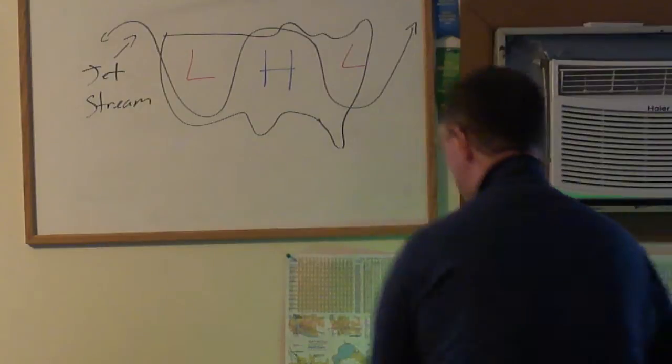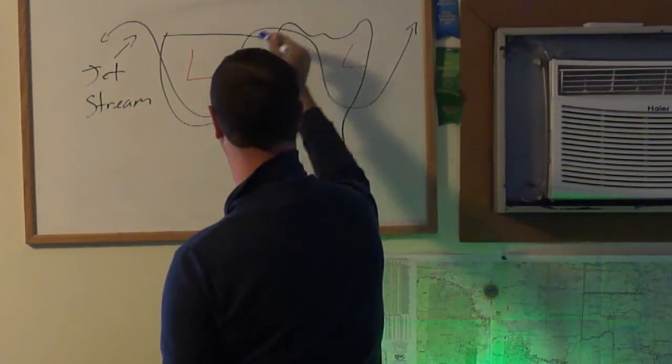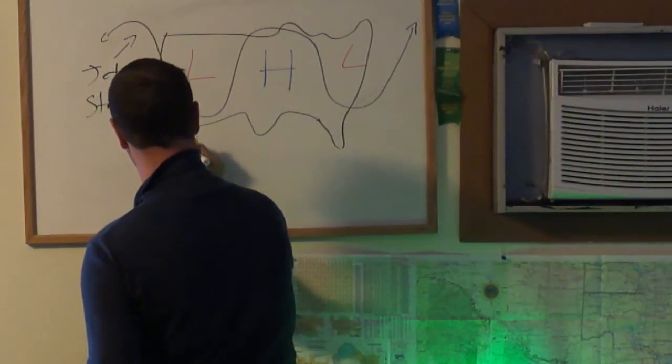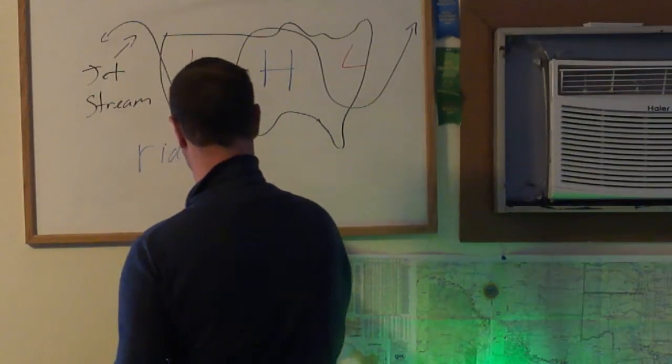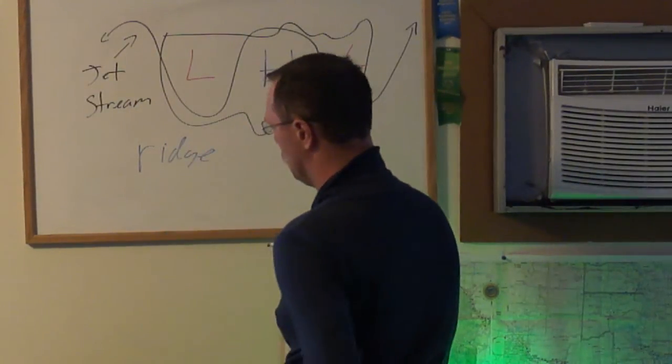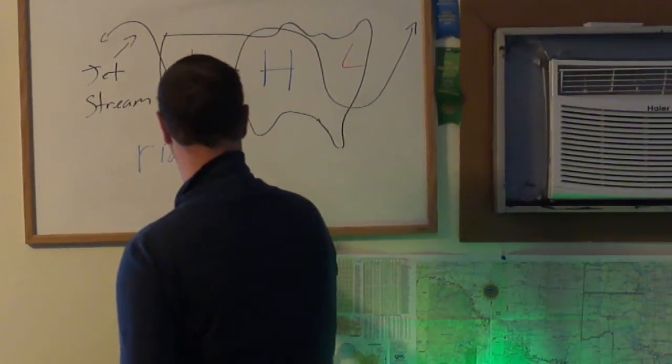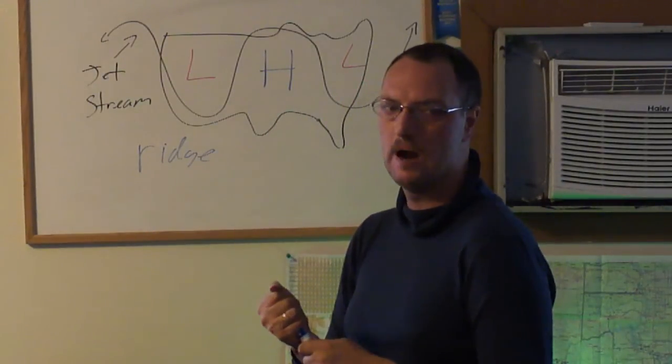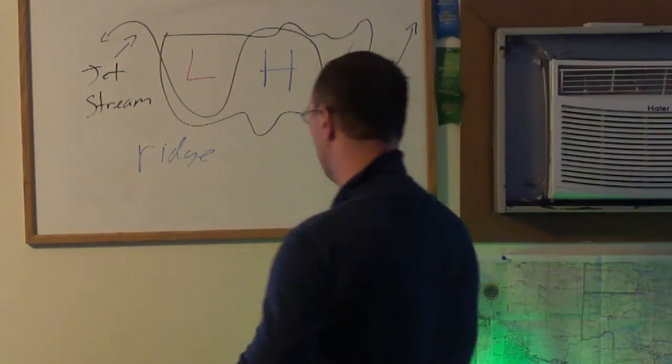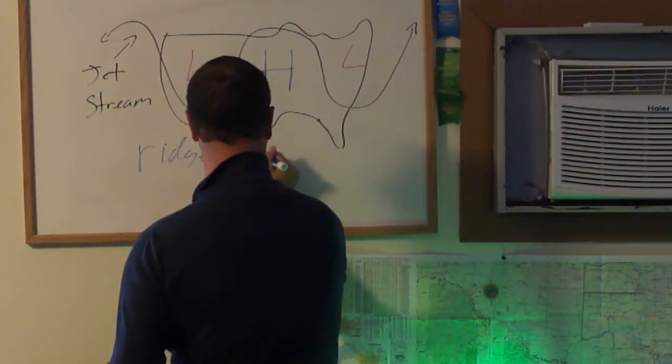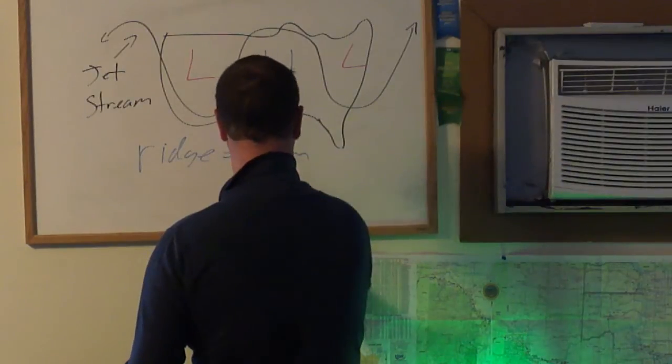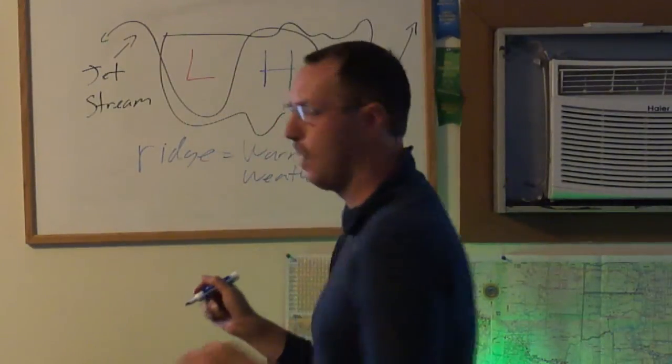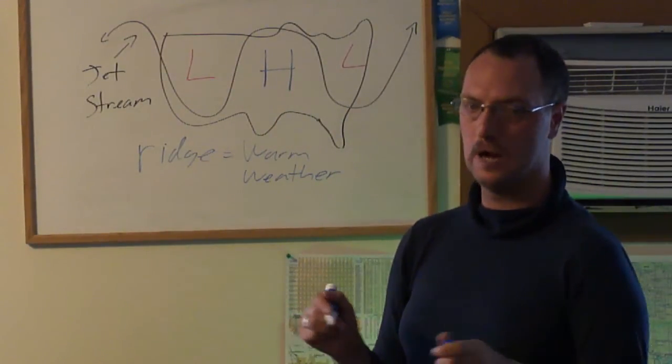Now, let me take the blue. Now we've got a hill that's there. That hill is called a ridge. Now, a ridge, it actually means fair weather, warm weather. It's warm weather, and a trough also means colder weather as well.